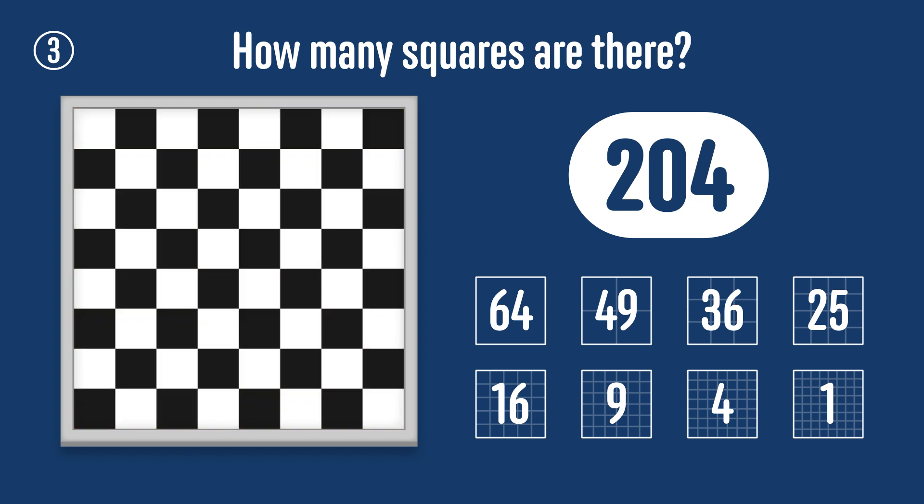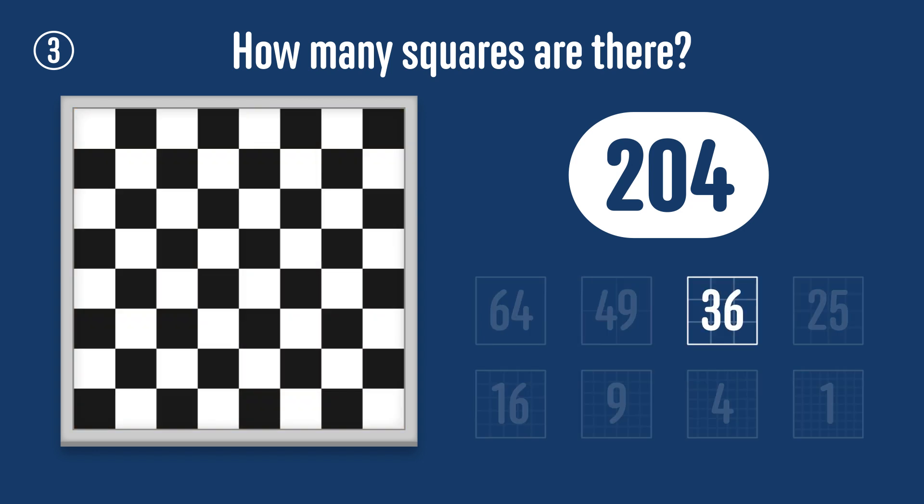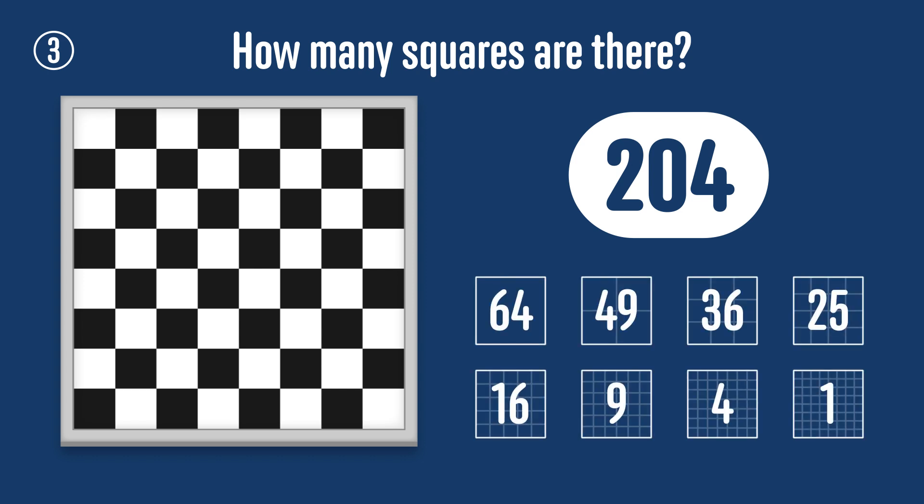So in total, the number of squares is 64 plus 49 plus 36 plus 25 plus 16 plus 9 plus 4 plus 1, which equals 204.